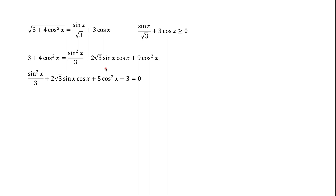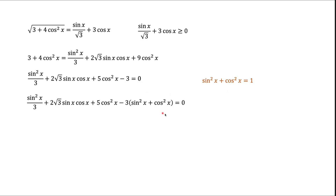We can see that we have three terms that have sines and cosines, and one term — the last one — has nothing of that kind, which is not very convenient. We would like all terms to have sines and cosines, but there's an easy fix. If we remember that sine squared plus cosine squared equals 1, we can apply this formula to the last term, then open the parentheses and combine like terms.